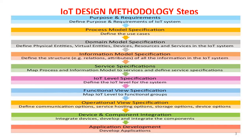The service specification maps the process model and the information model to services, and defines the service specification. You map the process model as well as the information model — there is a mapping between them — and that leads to defining the different services. That is the simple representation of the service model.